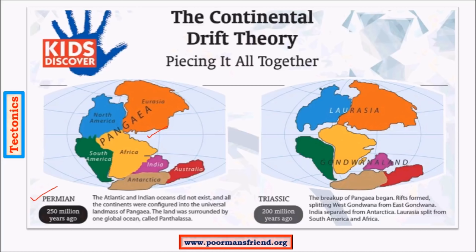The continents started drifting or moving away from each other due to various forces, and this is termed continental drift. The drifting began in the Mesozoic era, in the early parts of the Triassic period. With drifting, the northern parts are called Laurasia and the southern parts are called Gondwana land. North America, Europe, and Asia are part of Laurasia, whereas Africa, South America, India, Madagascar, Antarctica, and Australia are all part of Gondwana land.